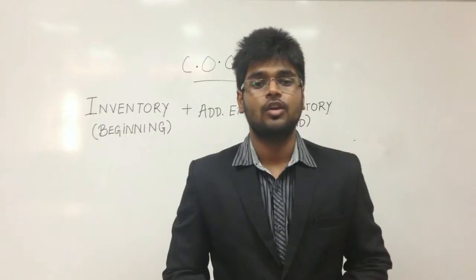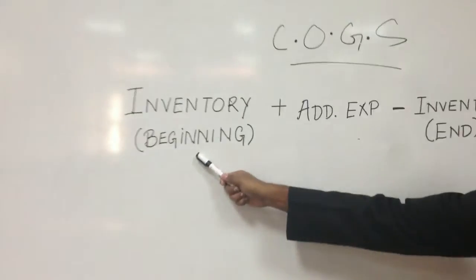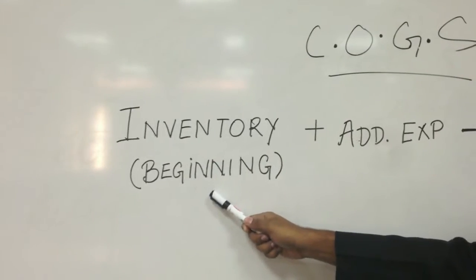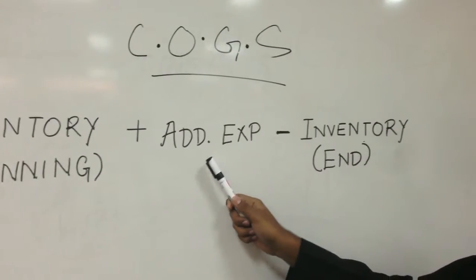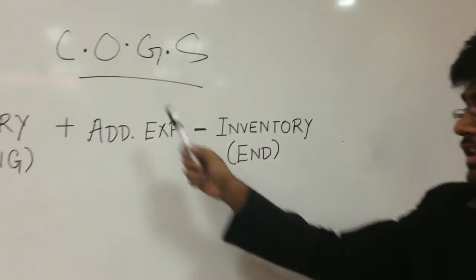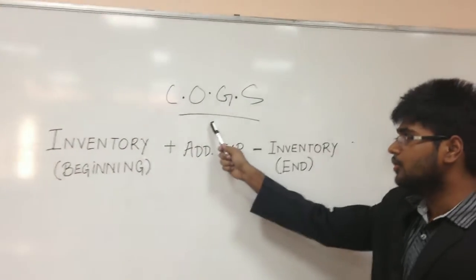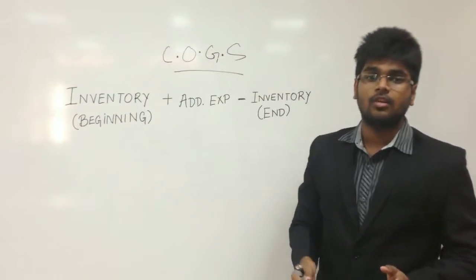Now coming to the formula of the cost of goods sold. First we will take the inventory at the beginning of the period, add the additional expenses incurred in managing that inventory, minus the inventory at the end of the period. This will give us the cost of goods sold at the end of the period by the manufacturer or the retailer.